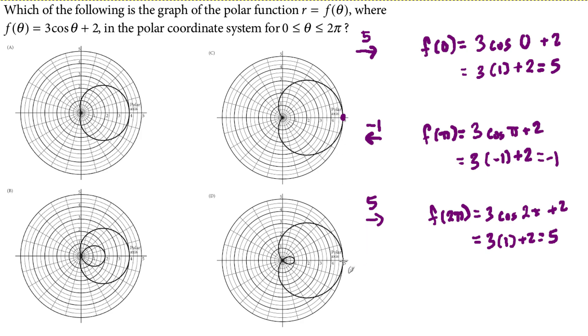C and d both have these. So, a and b do not have that polar coordinate 0, 5 or 2 pi, 5. We can eliminate those.